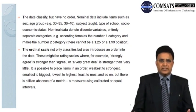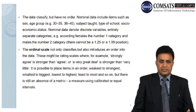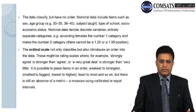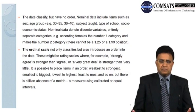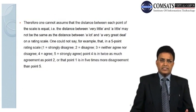The second is the ordinal scale, which not only classifies but also introduces an order into the data. These might be rating scales where, for example, 'strongly agree' is stronger than 'agree', or 'a very great deal' is stronger than 'very little'. It is possible to place items in order — weakest to strongest, smallest to biggest, lowest to highest — but there is still an absence of a metric, meaning a measure using calibrated equal intervals. Therefore, one cannot assume that the distance between each point of the scale is equal.